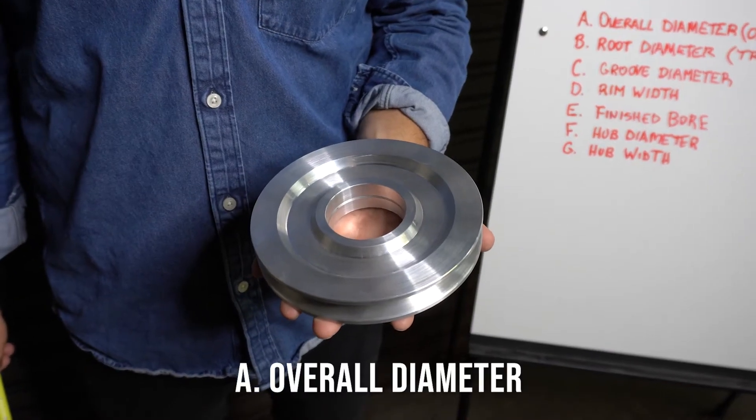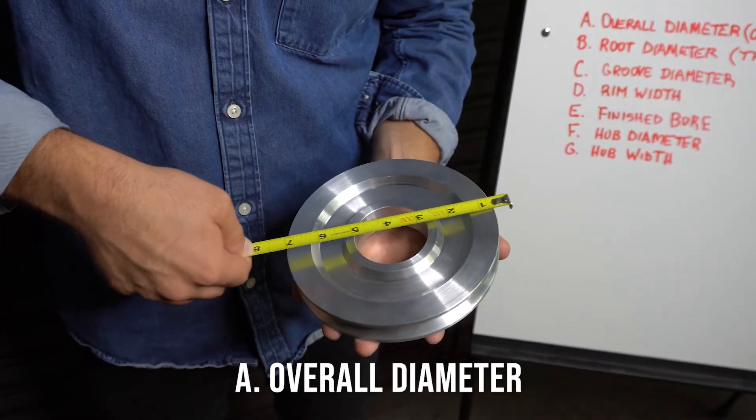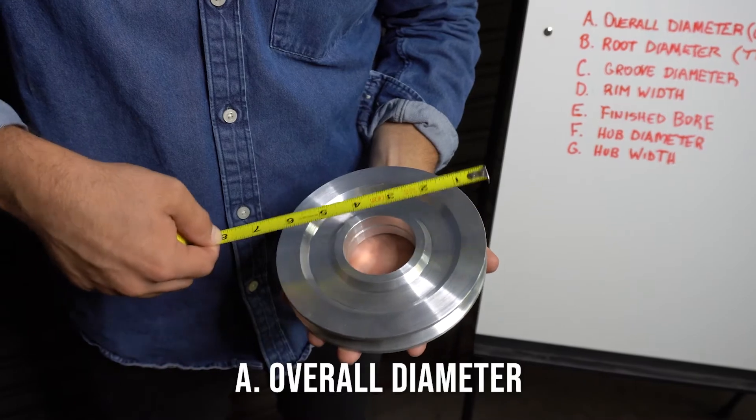This is how you measure the overall diameter. It is from one side of the shiv to the other. Six and a half inches.